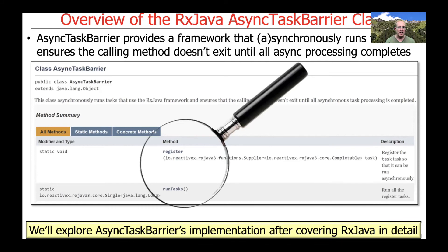We will explore the RxJava-based implementation of async task barrier later in the course, after we've discussed the various methods and operators found in Observable and Single as part of the RxJava framework's key classes. We could cover this now, but it would be confusing due to forward references to powerful and useful but somewhat complicated methods that will make much more sense after we've examined them in detail in their own isolation.